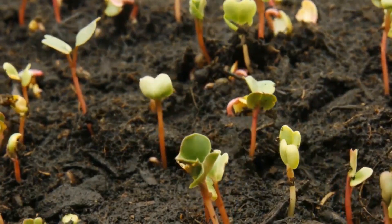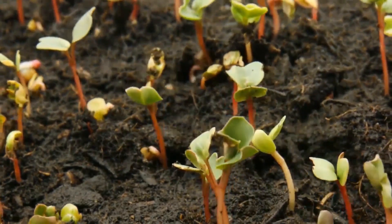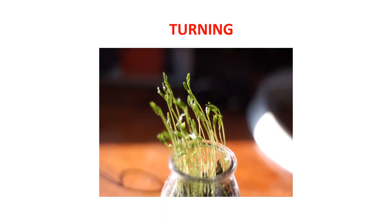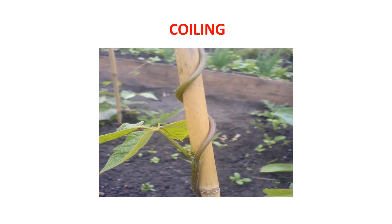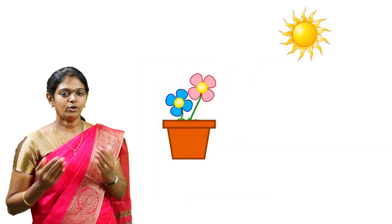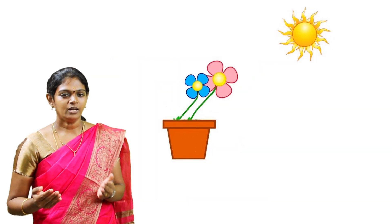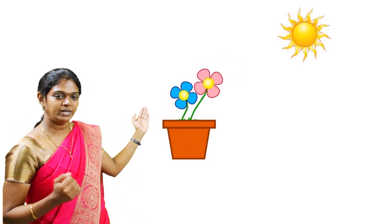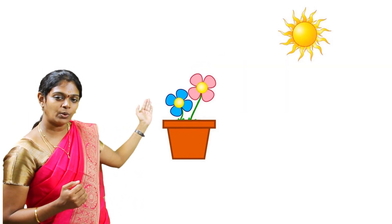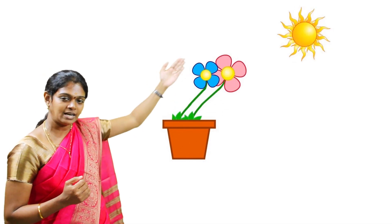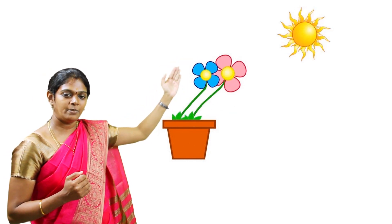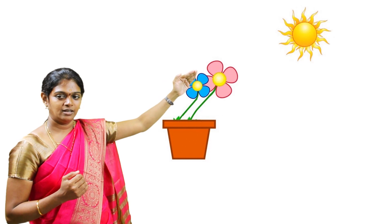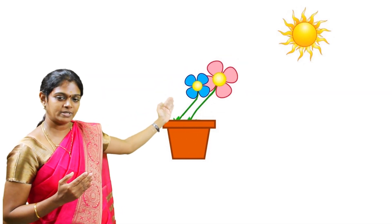Tropism is a kind of growth movement — movement like turning, bending, or coiling towards or away from some kind of stimuli. For example, if you keep a plant in a pot and place it near a window, the plant starts growing towards the path of sunlight. The plant bends towards the sunlight — this movement is known as tropism.